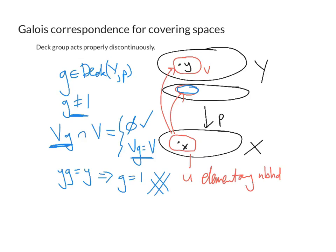So the main point we used here was that if we have a covering transformation that fixes a point it's the identity. So this proves the deck group acts properly discontinuously actually for any covering space but in particular for the universal cover X tilde.